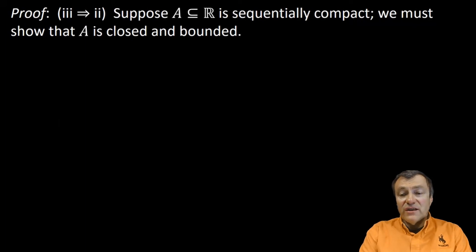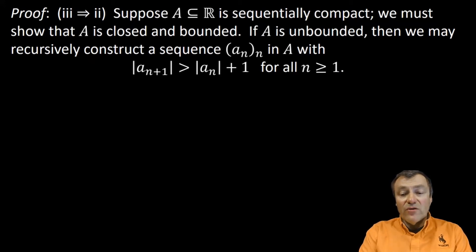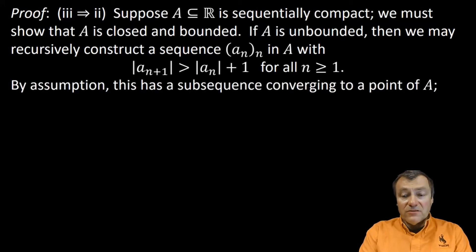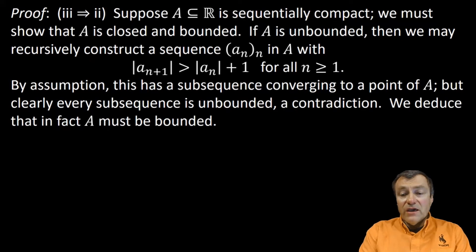What's left is to prove the converse that condition 3 implies condition 2. So, for this, we assume that capital A is sequentially compact. We need to show that the set A is closed and bounded. To prove boundedness, if capital A is unbounded, then we can recursively construct a sequence of points in the set A with absolute values of the terms growing by more than one at each step. By our hypothesis, this sequence of points should have a subsequence converging to a point of the set A. However, it is clear that every subsequence is still unbounded, and this is a contradiction. So, on the contrary, capital A is a bounded set.